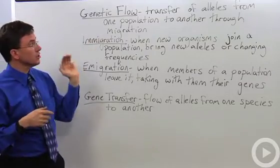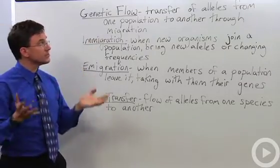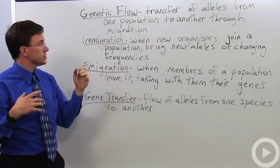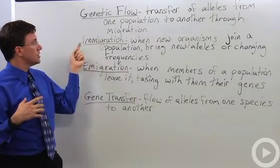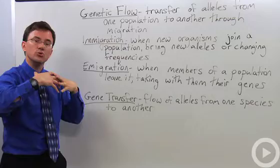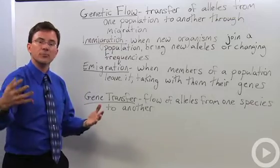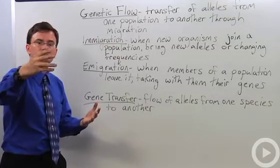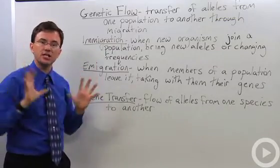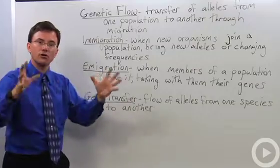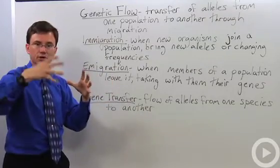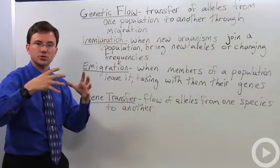Genetic flow is the transfer of alleles from one population to another through migration. With immigration, people bring in new alleles, or perhaps a larger group of people have a lot of a particular allele and they can change the overall balance of alleles within the gene pool of the population they just joined.